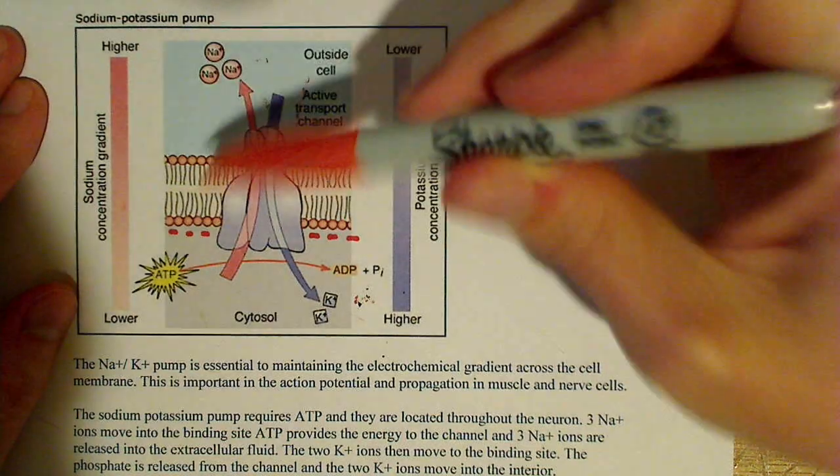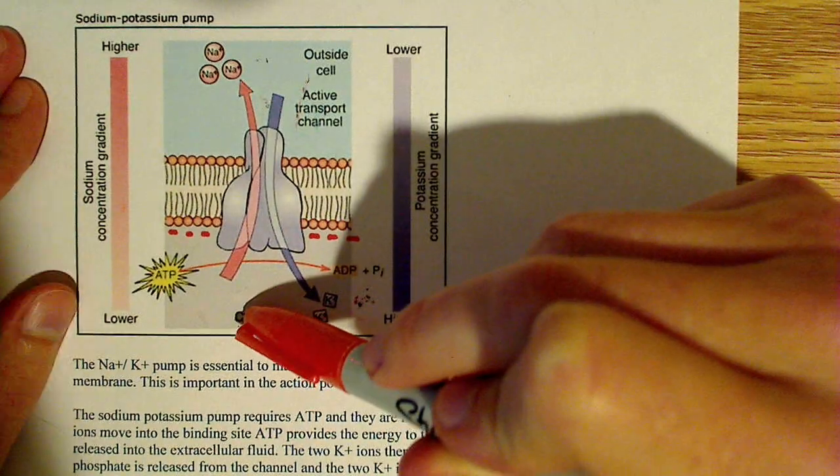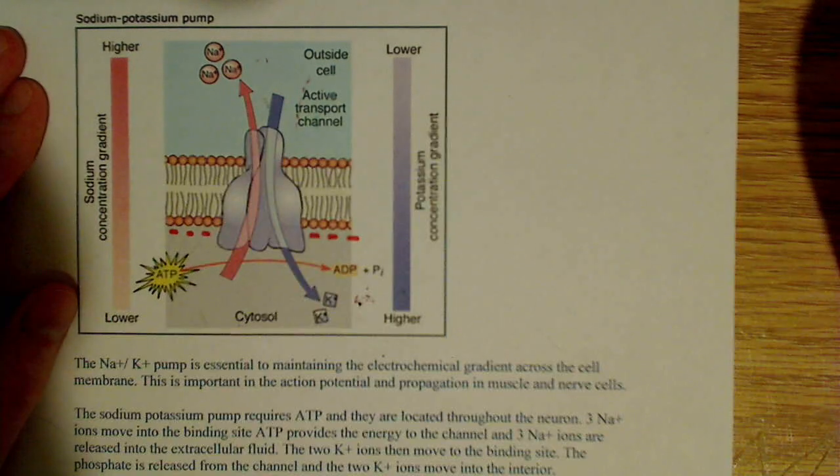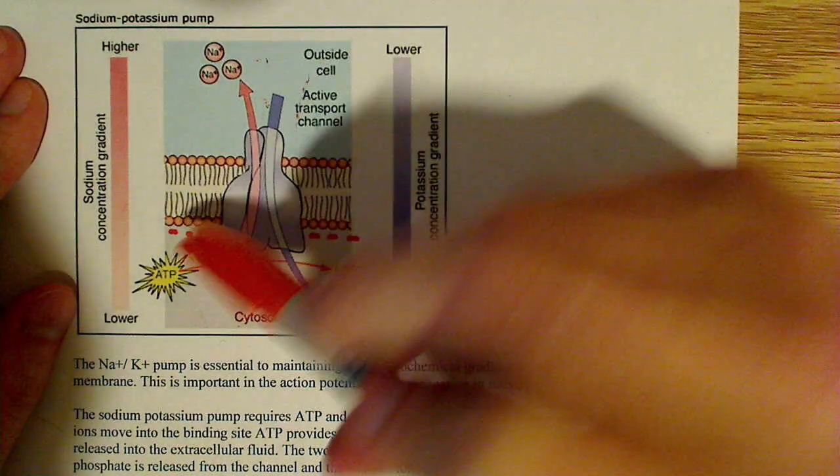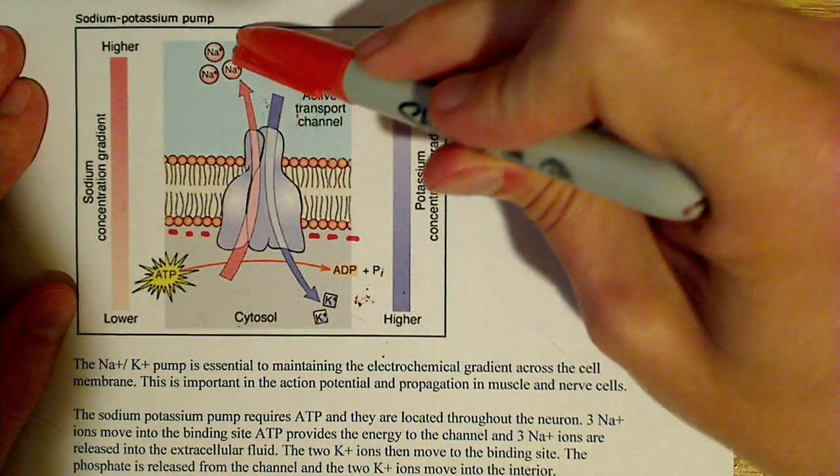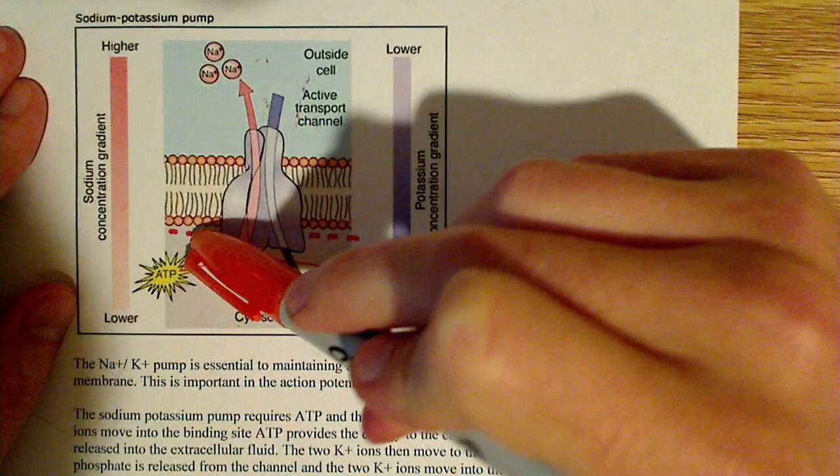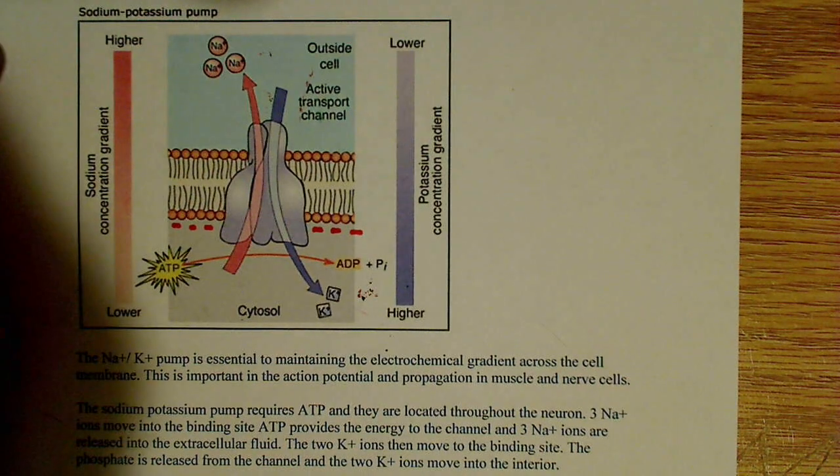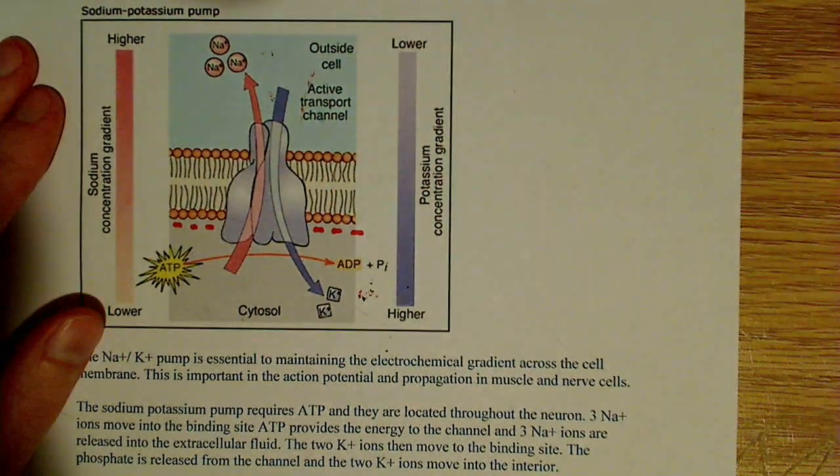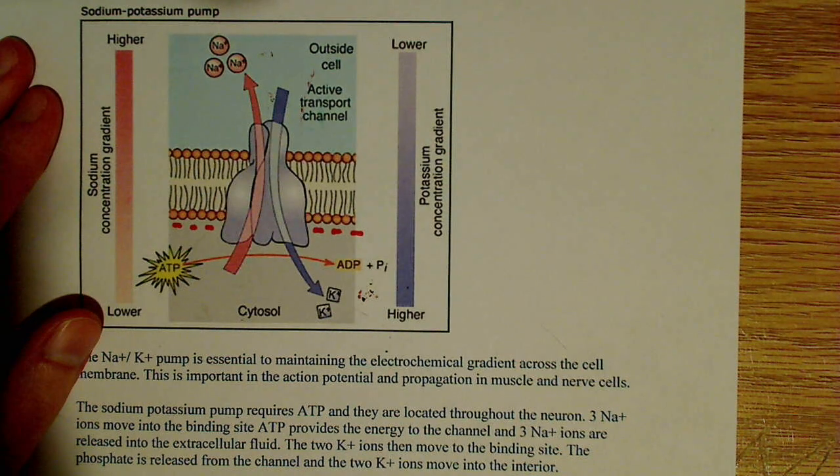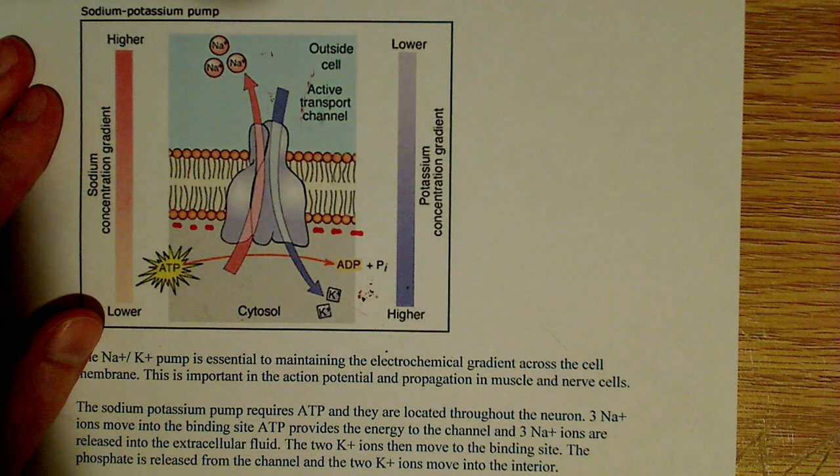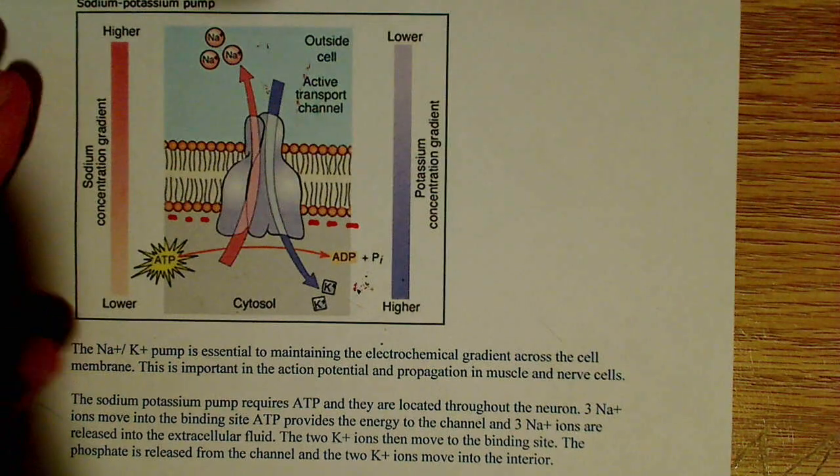Sodium wants to go from high concentration to low concentration, and the same principle is true because sodium is charged and wants to go in, because the positive charge on the sodium ion is attracted to the negative internal charge on the cell.